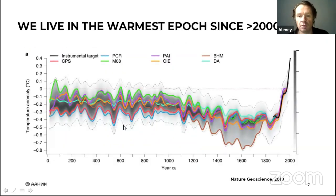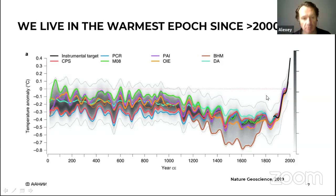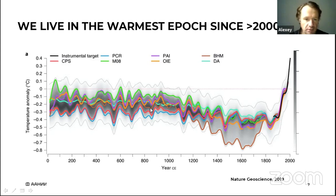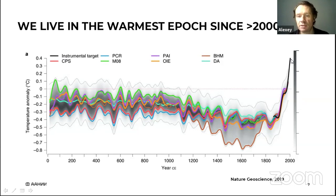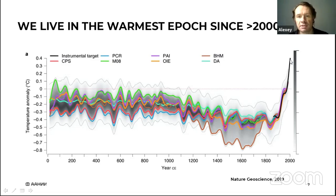If we combine paleogeographical data for the past 2,000 years, the climate was more or less stable, with the cooling of the Little Ice Age, and then in the 20th century we see very fast growing of temperature. Looking at this picture we understand that probably something is really going wrong with the present-day climate on our planet. We live in the warmest epoch since 2,000 years ago.